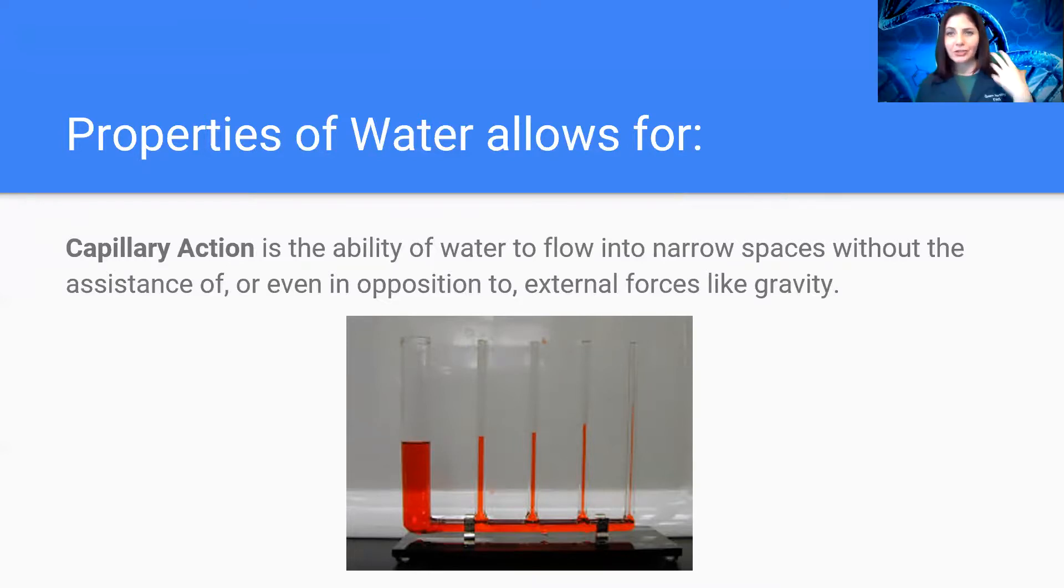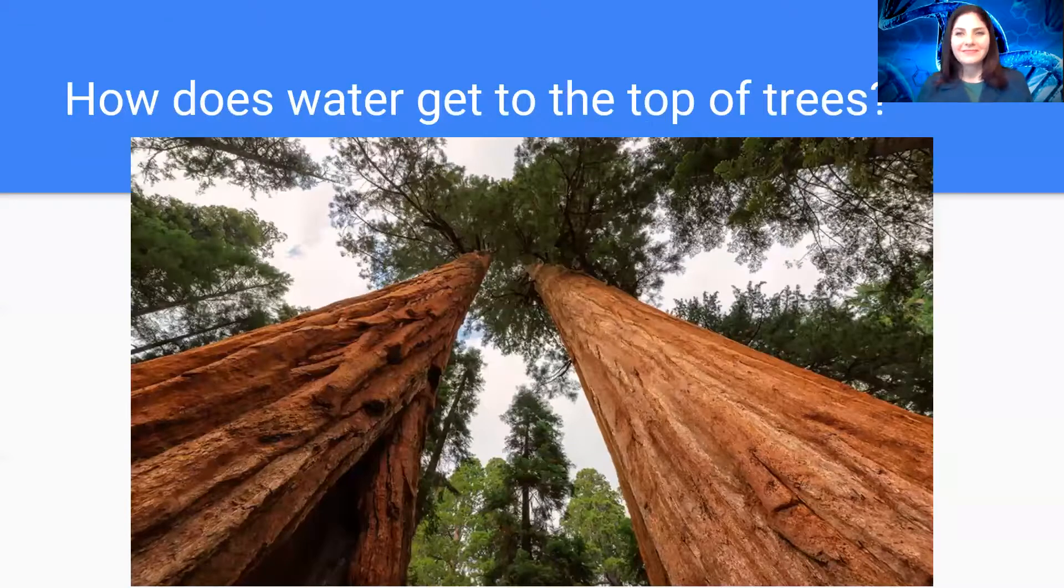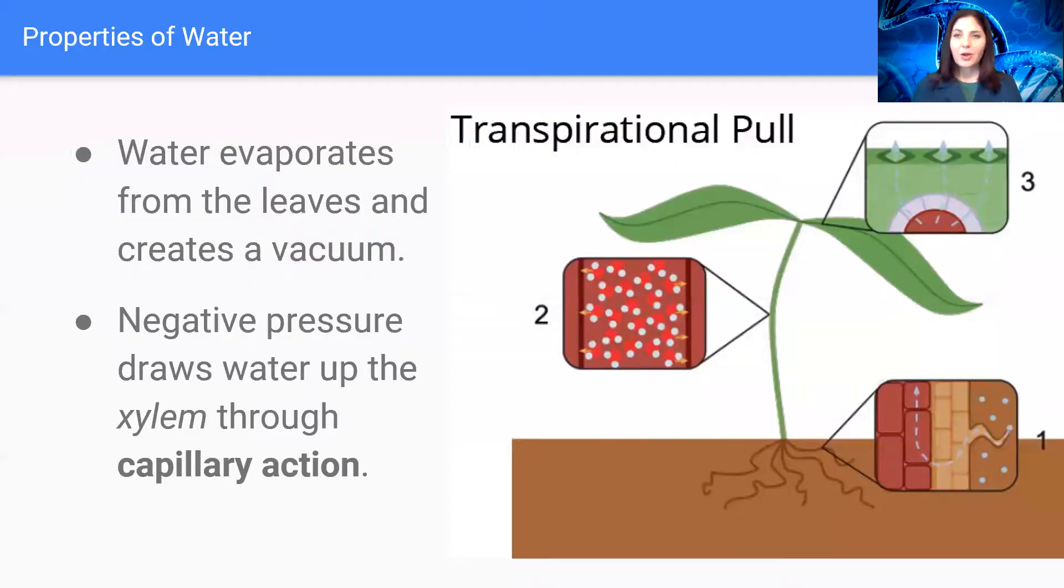Now this works in a much larger scale when we talk about trees that need to get water all the way from their roots to their branches. Trees undergo a process that's called transpiration. They open their little stomata and you get an evaporation of water. When those plants transpire and they lose water, it creates this negative pressure system. It helps to draw water up the xylem through the process of capillary action, using the properties of cohesion and adhesion.